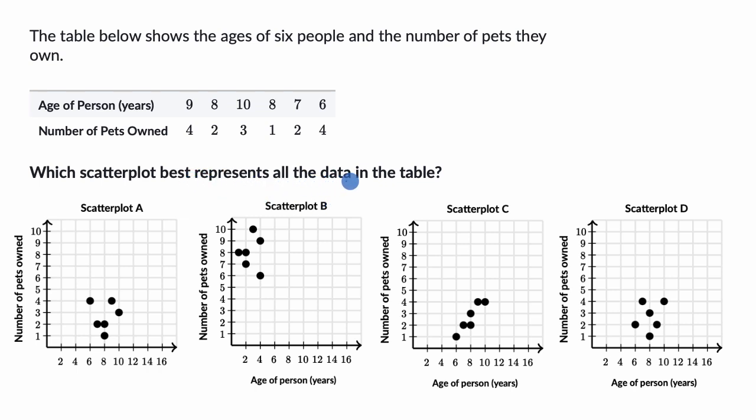Which scatter plot best represents all the data in the table? So pause the video and have a go at this before we do this together. Okay, so what I'm going to do is look at each of these age and number of pet pairs and see if I can find these points on each of these scatter plots.